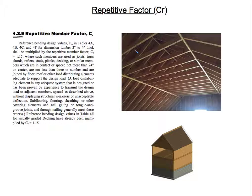The repetitive member factor is pretty straightforward. It applies only to bending members placed in series and takes into account the redundancy in roof, floor, or wall framing. It accounts for the fact that if certain conditions are satisfied — in this case, spacing not more than 24 inches — the failure or reduction in strength of one bending member will not necessarily lead to failure of the entire floor or roof system, because the structure can redistribute loads. If one member fails, the adjacent members will pick up the slack.